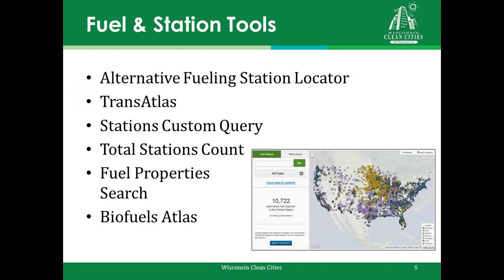Talking about fuel and station tools, the first is the Alternative Fueling Station Locator. It's great for anyone without a centralized refueling station — it allows you to select the type of fuel you need by city or zip code, specify the radius of your search area, and access advanced options such as owner type and payment options. Next is the Transatlas — a much more detailed interactive map that displays station locations, vehicle densities, and biofuel production facilities. It's great for researching and comparing stations using GIS layering.